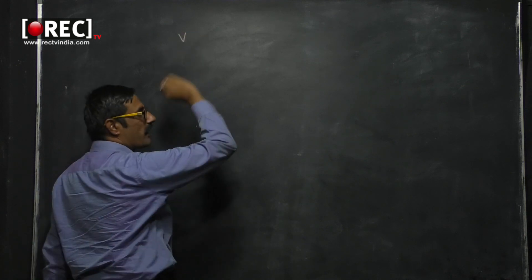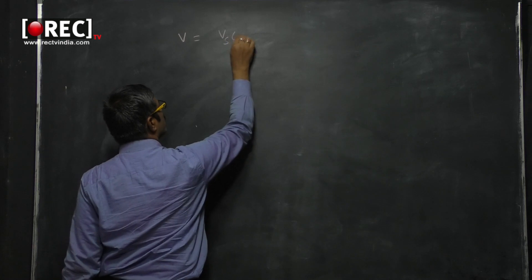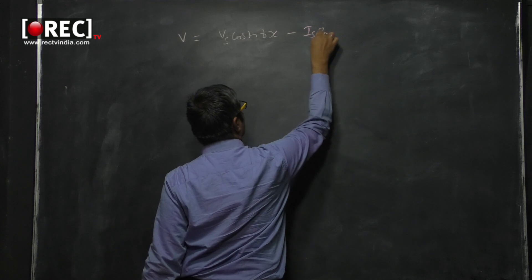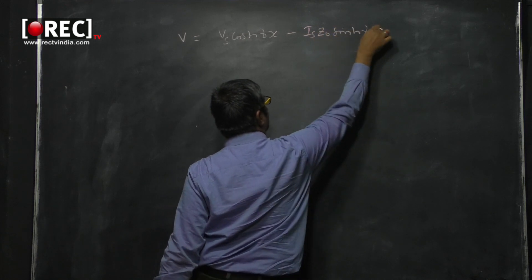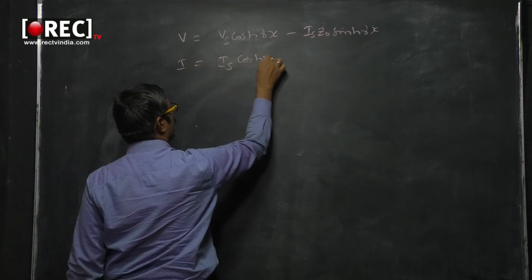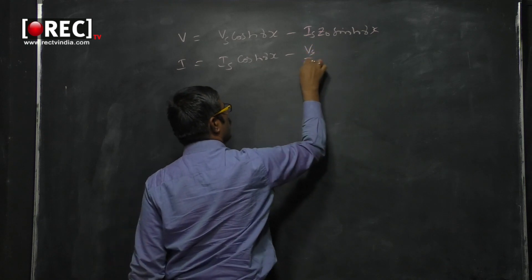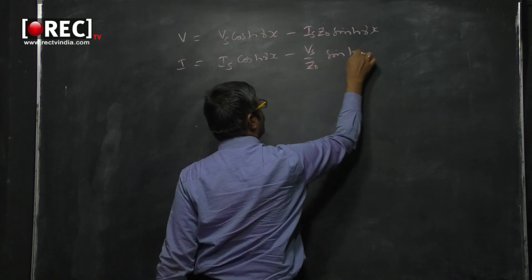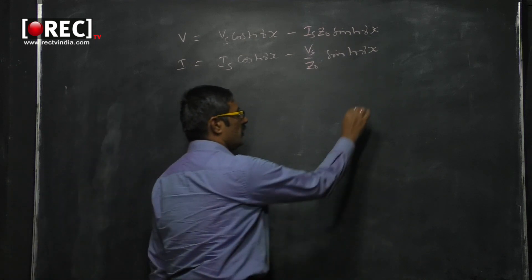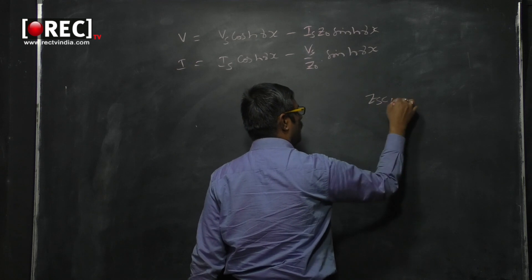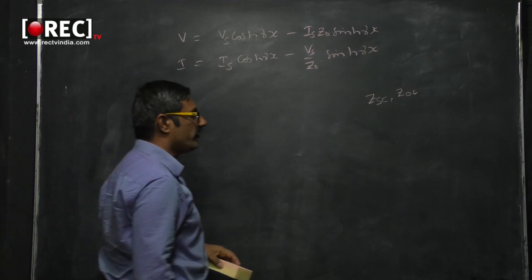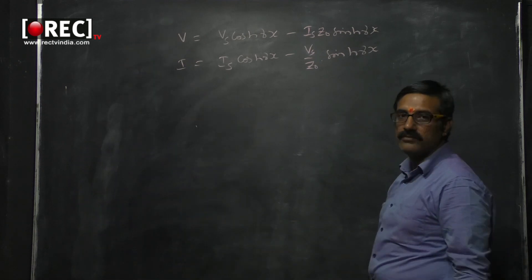V equals Vs·cosh(γx) minus Is·Z0·sinh(γx), and I equals Is·cosh(γx) minus Vs/Z0·sinh(γx). We need to determine Zsc and Zoc. These equations give V and I at any point on the transmission line in terms of the source parameters.